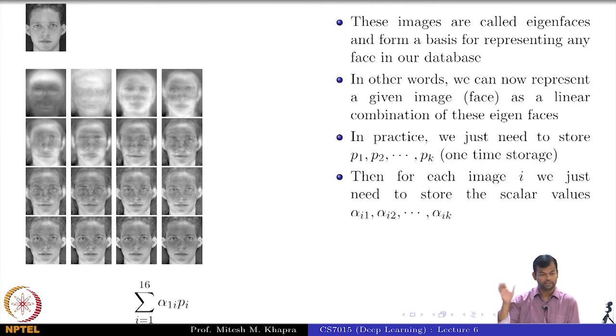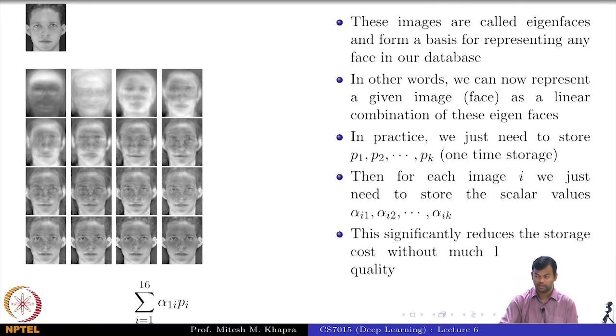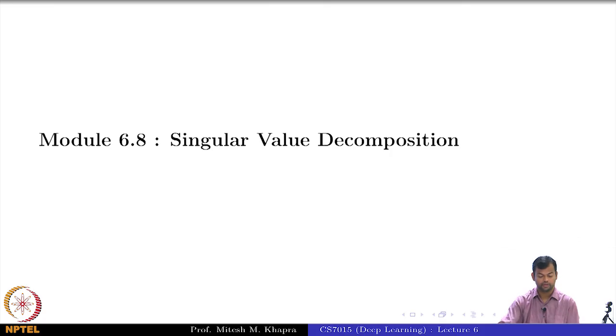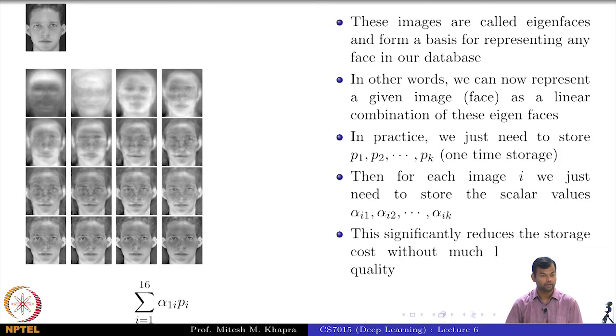Is the intuition clear? This eigenvector storage is a one-time storage. We are going to store these k eigenvectors, each of them is 10K dimensional, and if k is 100 or 200 we do not really care because the original data was very large. For each image we just need to store these alpha values, k of them. For each image instead of 10K we will just store 100 to 200 alpha values, and this is significantly reduced. This is why we need to do all this. What is the other advantage of doing this?